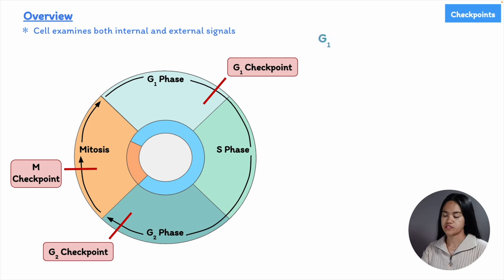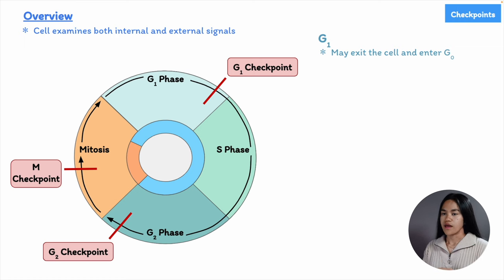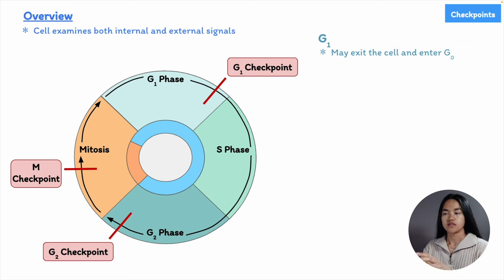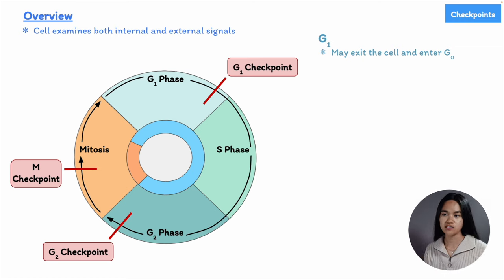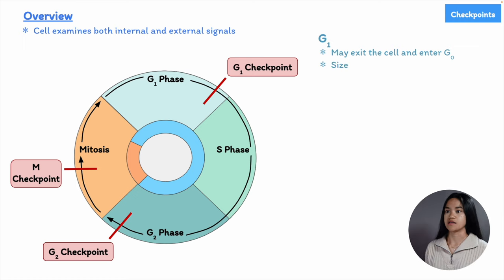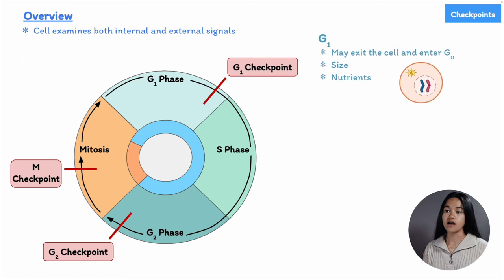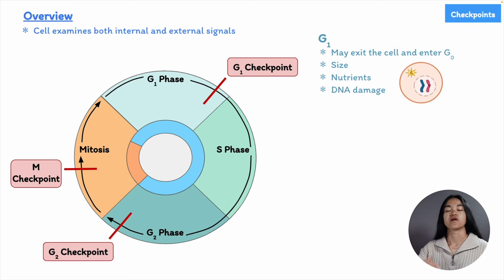At G1, if a cell does not receive a go-ahead signal, it may exit the cycle and enter the G0 phase, a non-proliferative state. When extracellular conditions are undesirable, cells can postpone progress through G1 and even enter G0. Cell growth in animals depends on certain signal molecules in the external environment. Before proceeding to the S phase, the control system confirms that everything is favorable — checking cell size, nutrient availability, and whether the DNA is intact. If a cell doesn't get the green light at the G1 checkpoint, it may leave the cell cycle and enter G0.